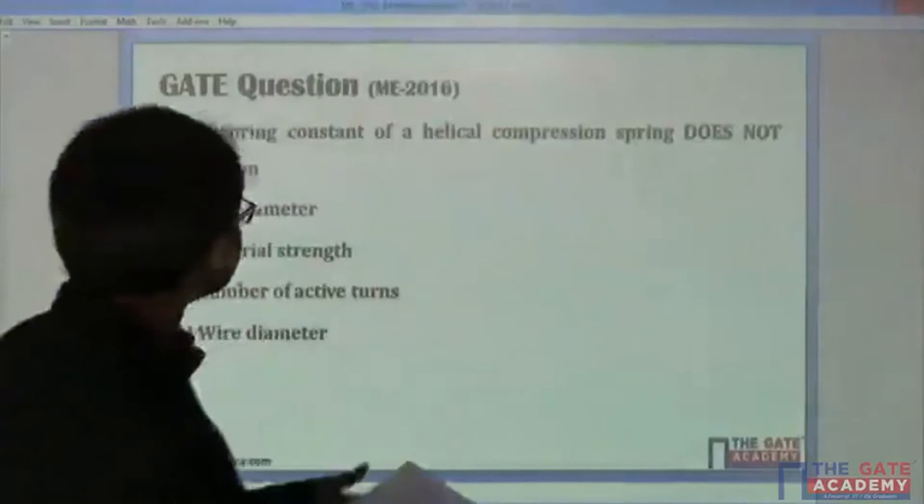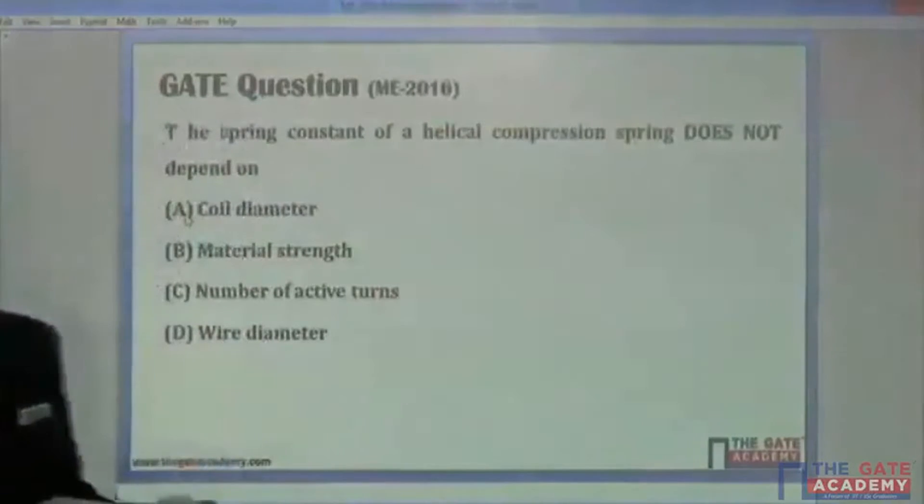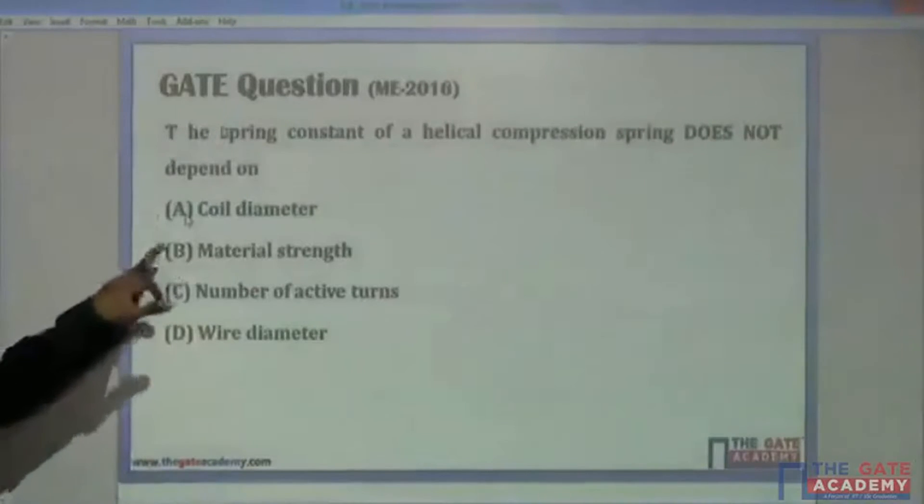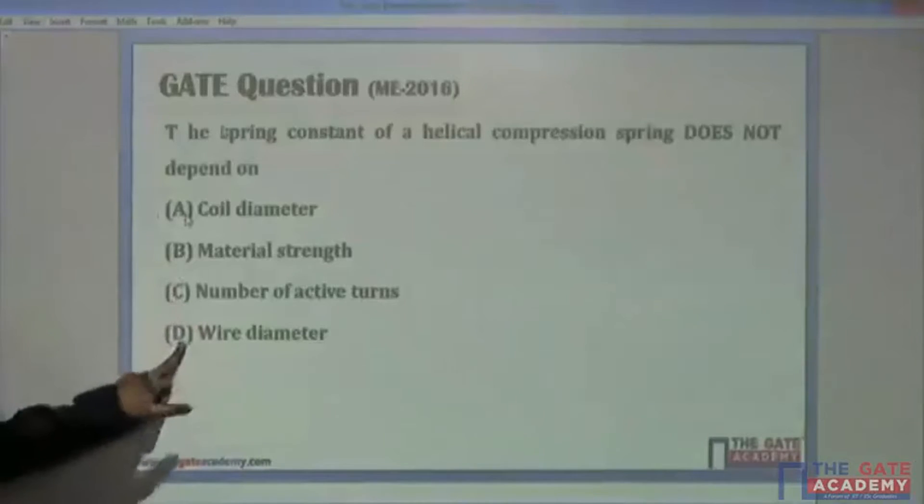Question number 22. Here they are asking the question: the spring constant of a helical compression spring does not depend upon - is it coil diameter, material strength, number of active turns, or wire diameter?